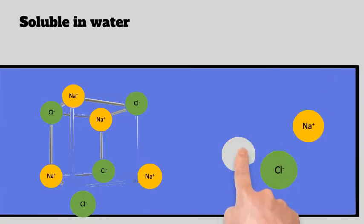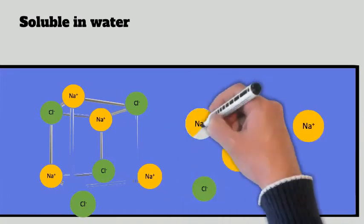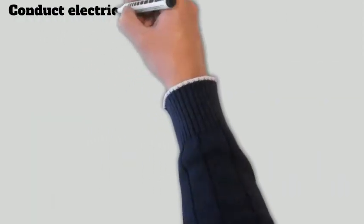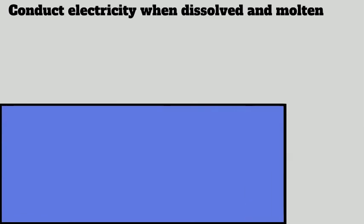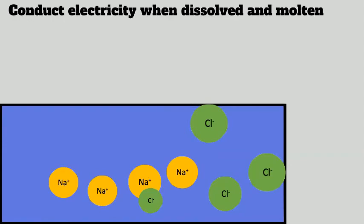Another property that ionic substances have is that when you dissolve them in water or you melt them, they will conduct electricity. And the reason why they conduct electricity is if we put electrodes either side of our solution or either side of our molten substance, we see our positive ions are going to be attracted to our negative electrode and the negative ions are going to be attracted to the positive electrode.